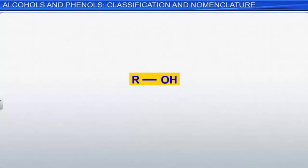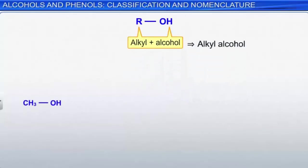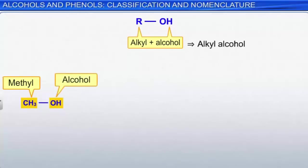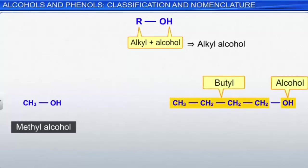Now that we understand the classification of alcohols, let's turn to their nomenclature. The common names of alcohols are derived from the name of the alkyl group with a -yl ending, plus the word 'alcohol.' For example, CH3OH is commonly called methyl alcohol. The molecule with a 4-carbon straight chain corresponds to n-butyl alcohol, where 'n' indicates an unbranched carbon chain.